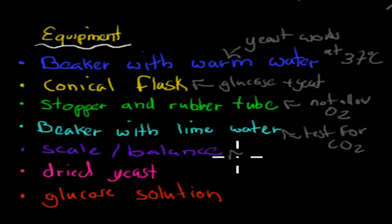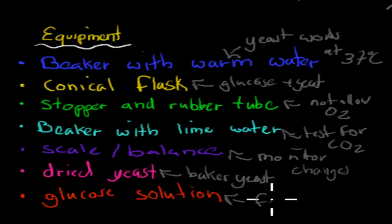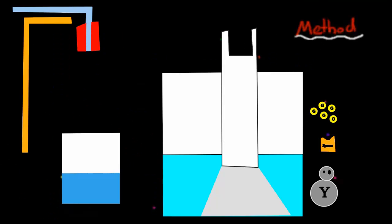Scale and balance to monitor changes. We also had our dried yeast, usually baker's yeast. And that allows us to ferment. Glucose was obviously the thing that was being fermented by the yeast. So this is our equipment and the reasons why we would have used that equipment. Now we've got the animation itself.